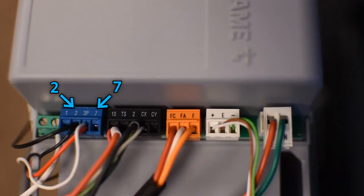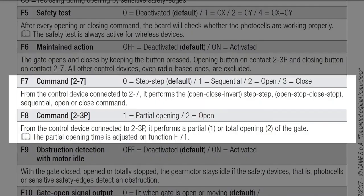To send a command using an external device like a push button, you can use pins 2 and 7 as a normally open contact and select the function you want in F7. Also, the pin 3P can be used and assigned in F8.